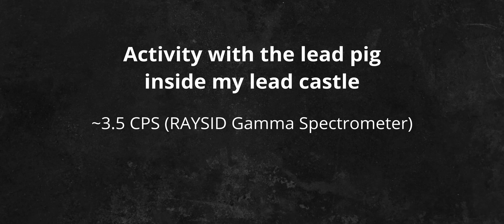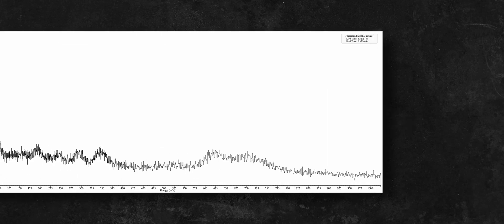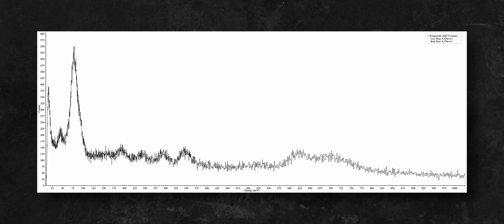Inside of my lead castle, the background activity is only 1.2 counts per second when measured with my racet gamma spectrometer. After placing the lead pig container inside of my lead castle, I got a reading of 3.5 counts per second, and after collecting data for a couple of hours, I managed to create a gamma spectrum of the lead pig.